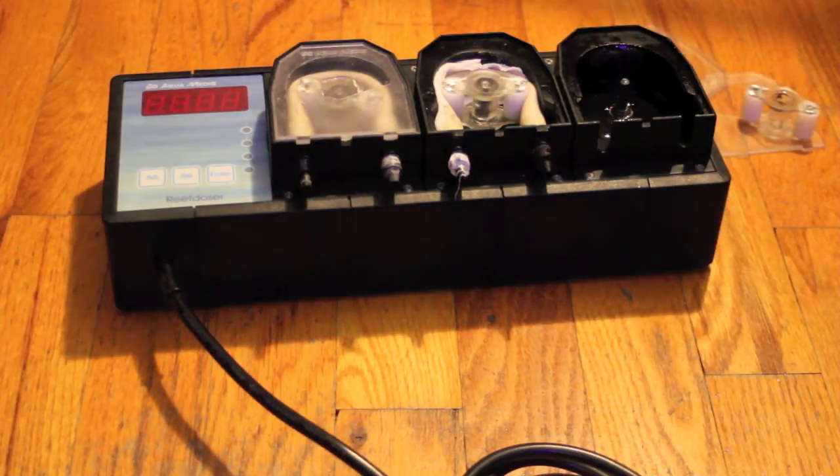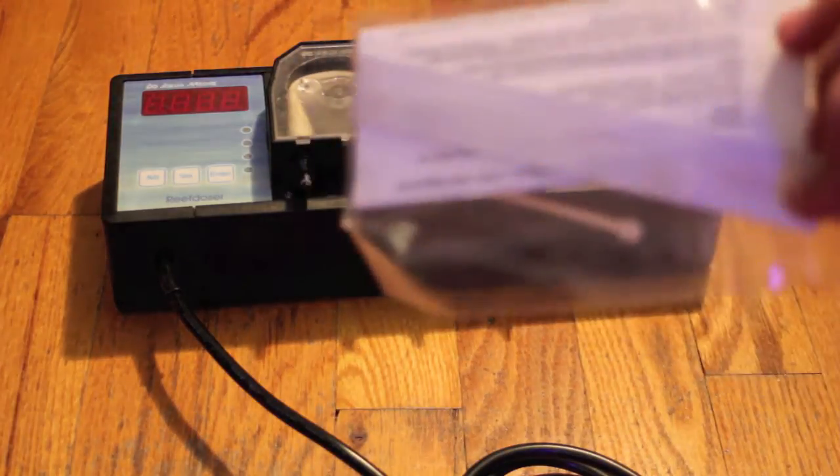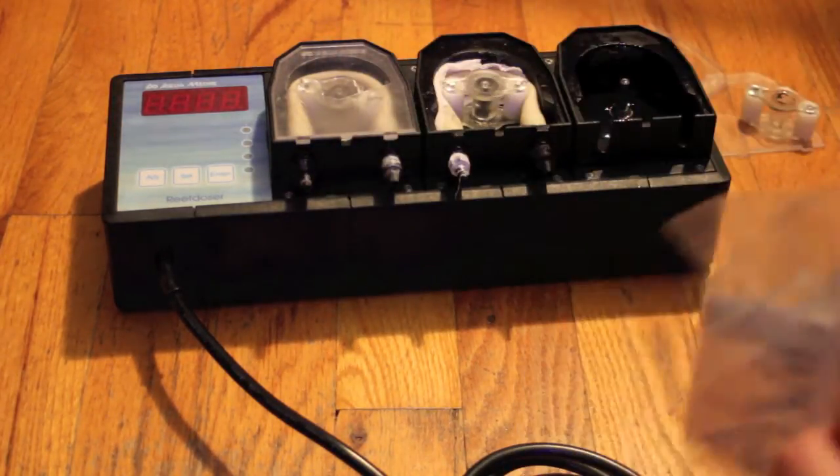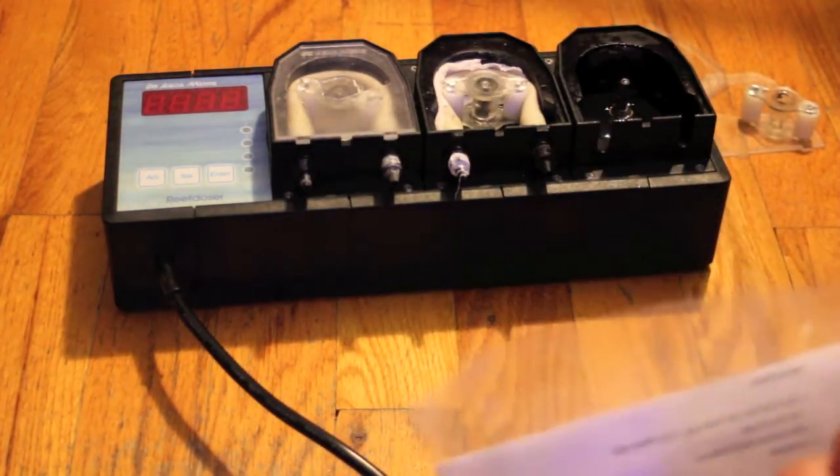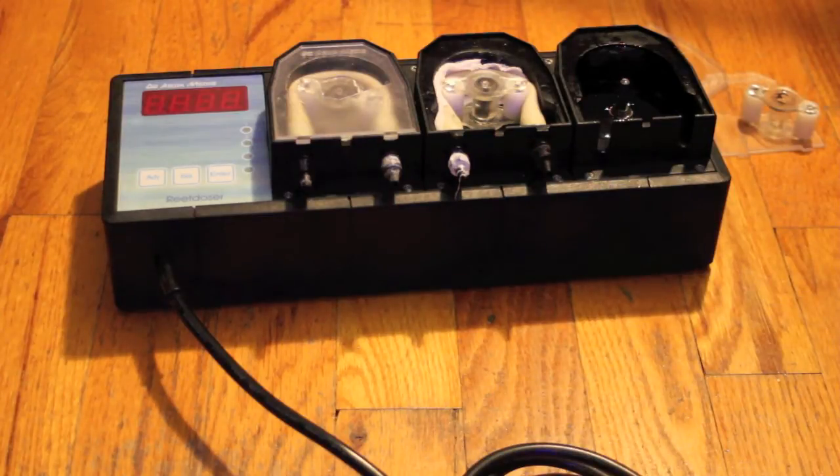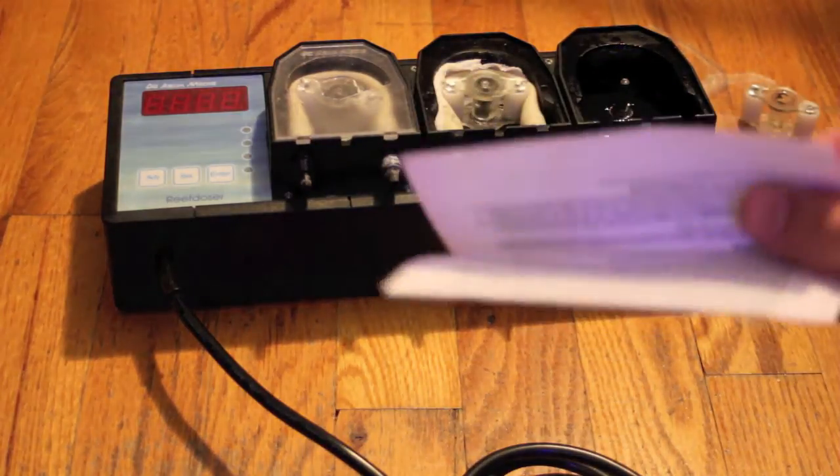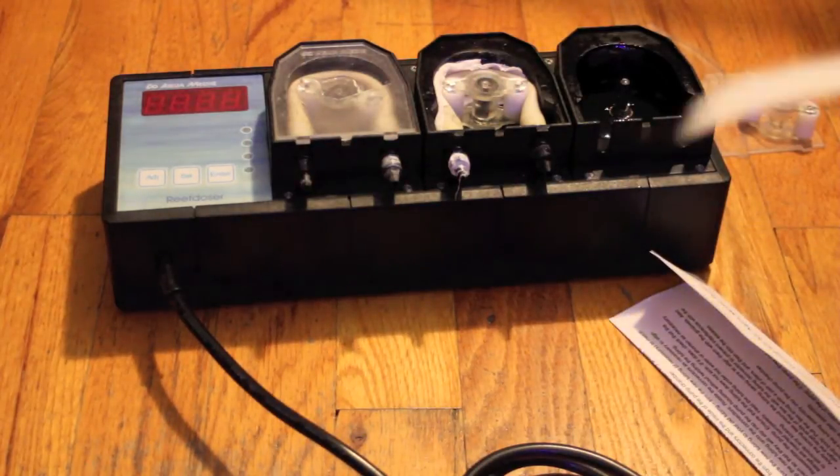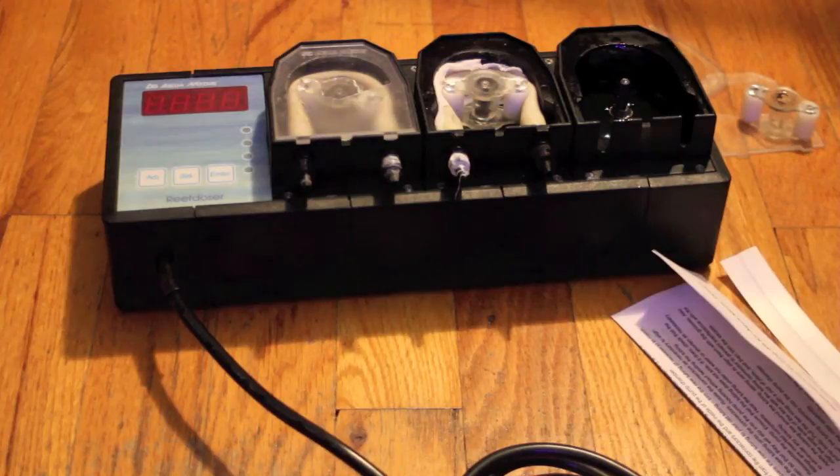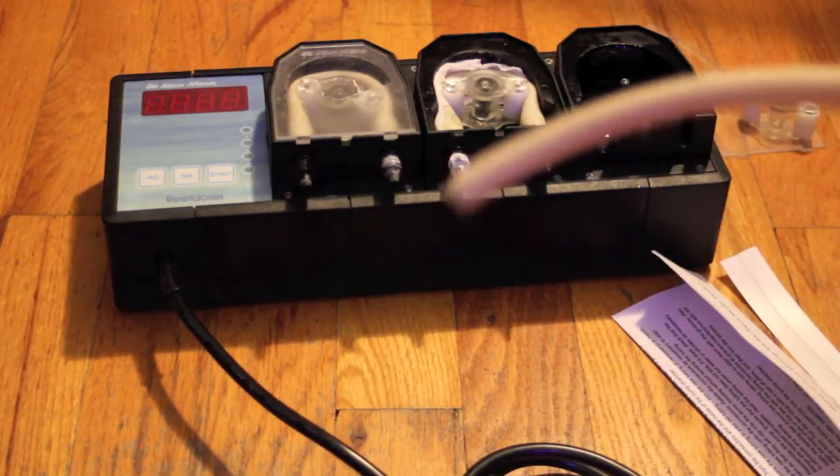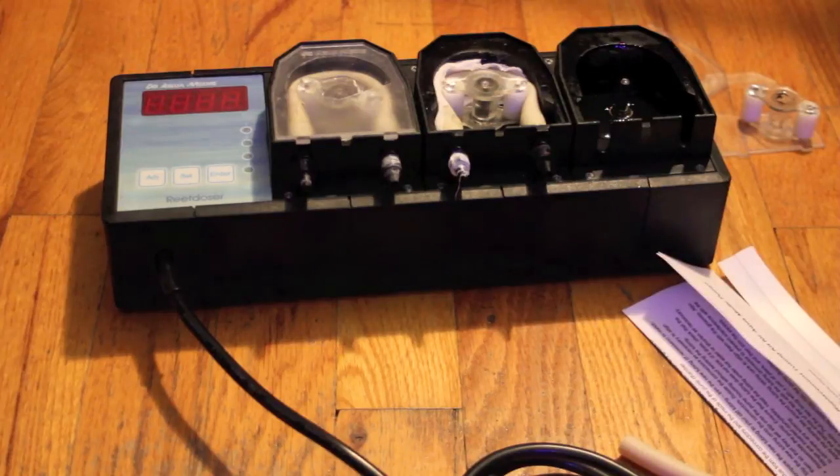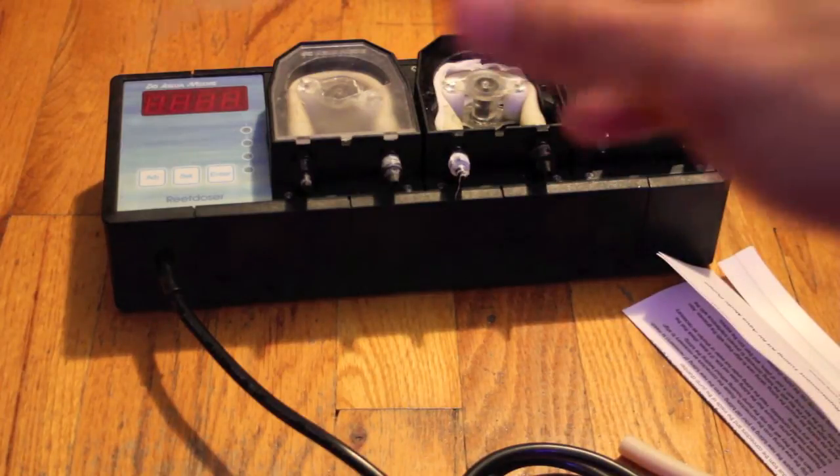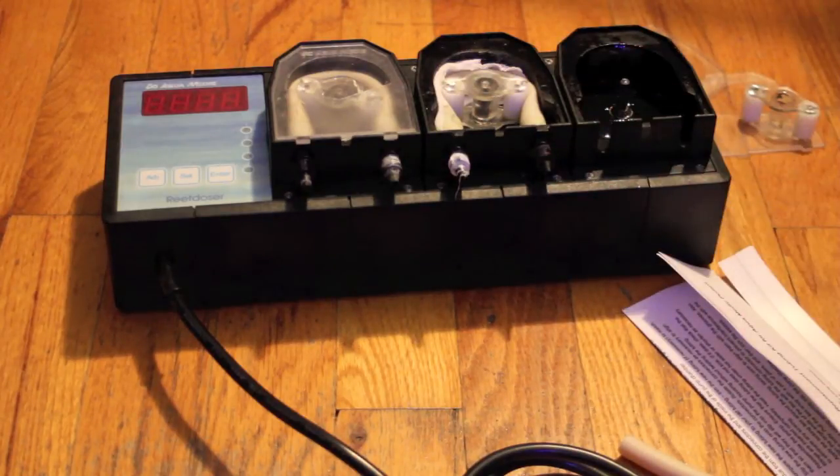So when you order this package, it comes neatly in this little ziplock with easy to read detailed instructions - you're going to need them. It makes it really simple. It comes with a spacer if you happen to need it, which I think you want. And it comes with pre-cut tubing, which is excellent, no measuring or anything, and it gives you zip ties because you're going to need the zip ties and I'll show you why in a little bit.